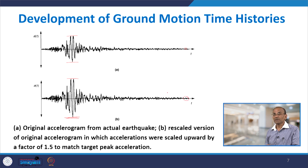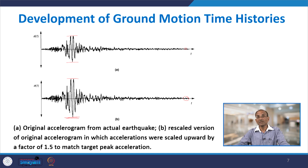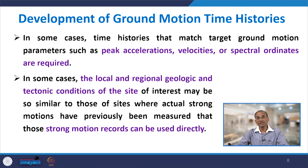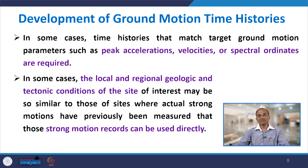There is no change in frequency content or duration — only the peak values have been scaled. This is normally done when you want to match a target spectrum by scaling up the record. In some cases, time histories that match target ground motion parameters — such as peak acceleration, peak velocities, or spectral ordinates — are required.